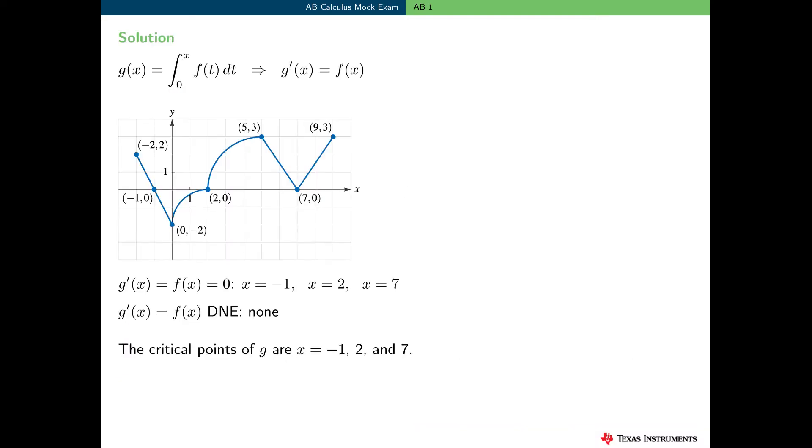Here's a solution to this problem. We need to find the critical points of g. So the first thing we need to do is to find the derivative g prime. Using the fundamental theorem of calculus, g prime of x is equal to f of x. Now, we don't have an analytic expression for f, only a graph. So we need to look at the graph and find all those places where f is 0 or does not exist.